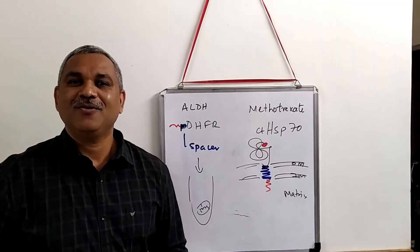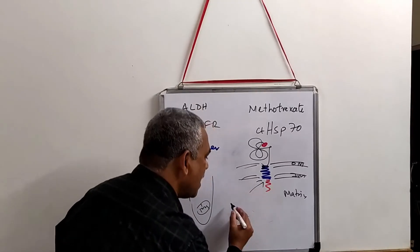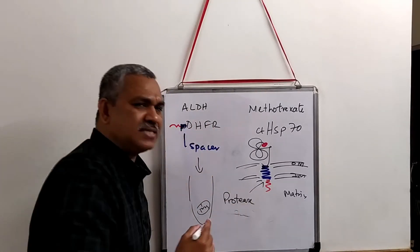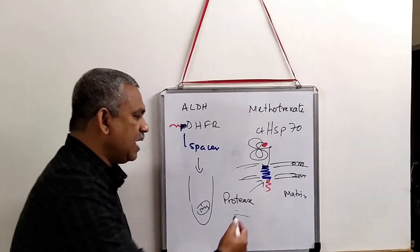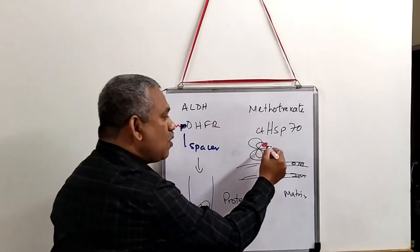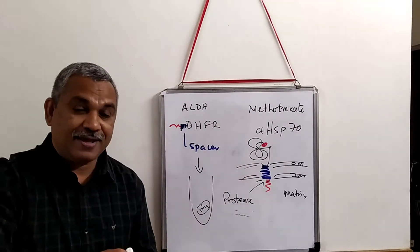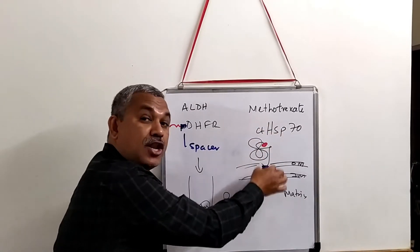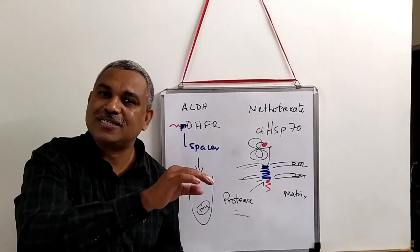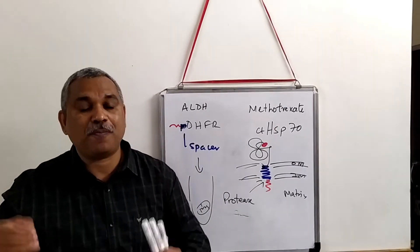Cleavage by protease is the routine practice, and then the protein gets folded. But now, because of methotrexate, the protein is folded and this protein cannot pass through the two channels — the outer channel and the inner channel. It cannot pass through.